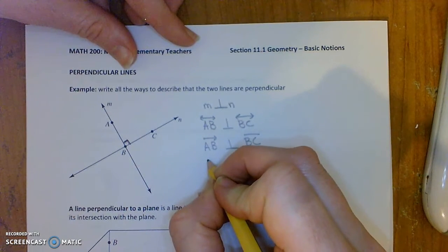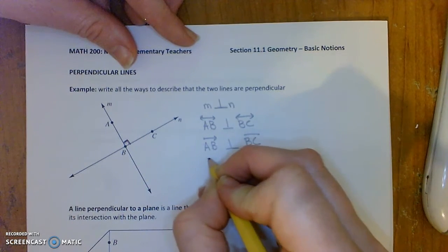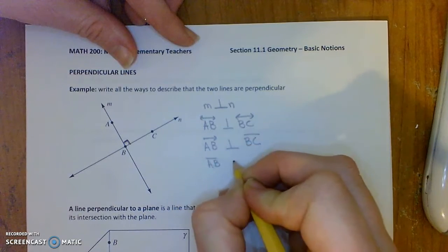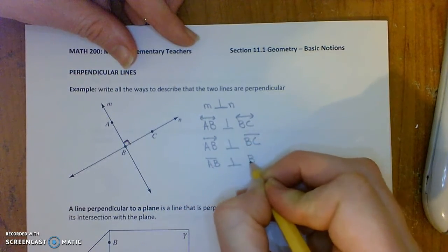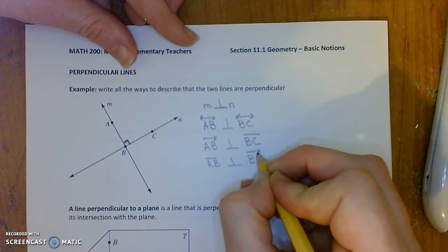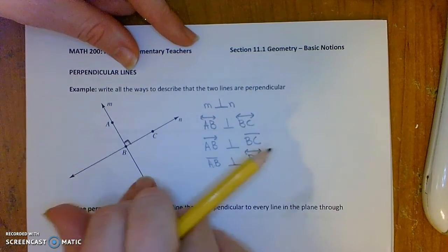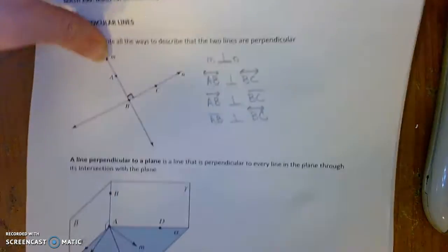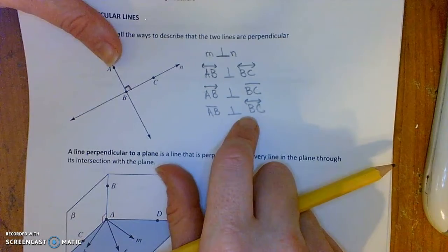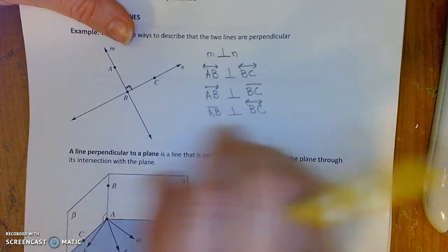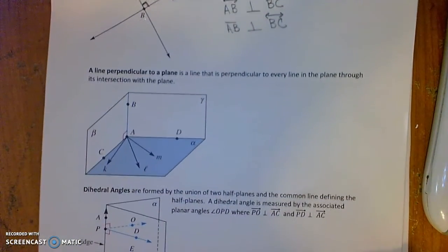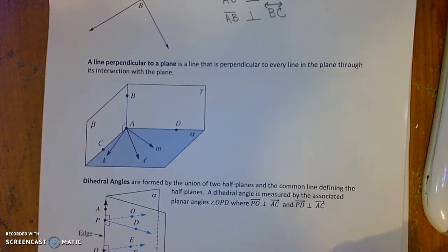Or two segments are perpendicular to each other. Or the segment AB could be perpendicular to the line BC. There's even more ways to say that these things are perpendicular to each other. But you get the point that lines, rays, and segments can all be perpendicular to each other.